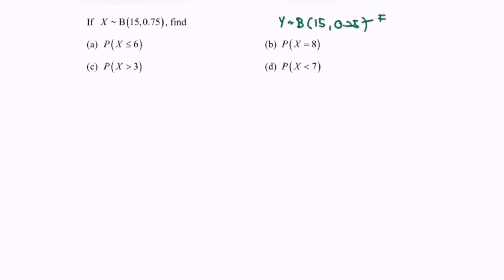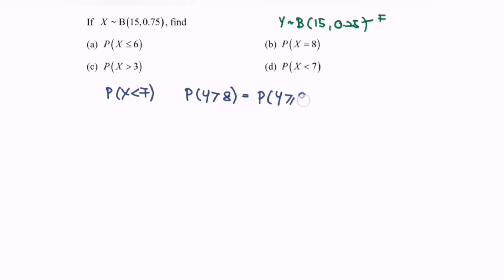For part D, we have the probability that x is less than 7. Reversing the situation, Y is greater than 15 minus 7, which gives 8. Since this is the discrete case, signs are very important, so we modify to P(Y ≥ 9). Referring back to part A, we already found that value to be 0.0042. So the probability that Y is greater than or equal to 9, or equivalently that x is less than 7, equals 0.0042. Thanks for watching.